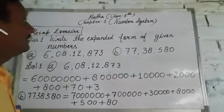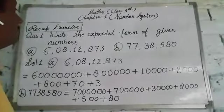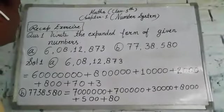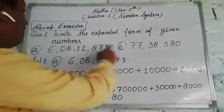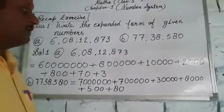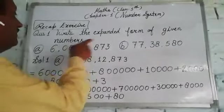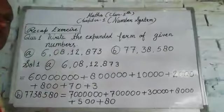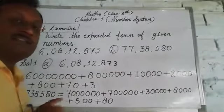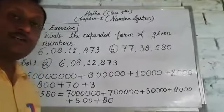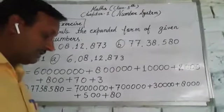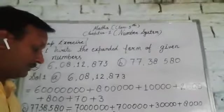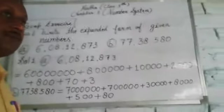Here it is written question one: write the expanded form of given numbers. These numbers are written in expanded form. In the previous class, you have written numbers in ascending order and descending order, and the smallest, biggest, expanded form and short form.